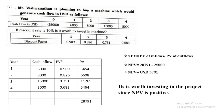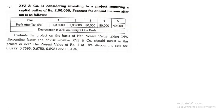Now for the third sum, which has a slight variation. XYZ Company is considering investing in a project requiring a capital outlay of ₹2 lakhs. The annual income after tax is given as 1 lakh, 1 lakh, 80,000, 80,000, and 40,000. Depreciation is at 20% on a straight-line basis. We evaluate the project using a 14% discounting factor, and the discounting factor values are also provided.